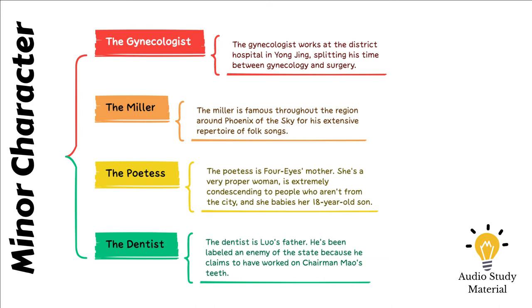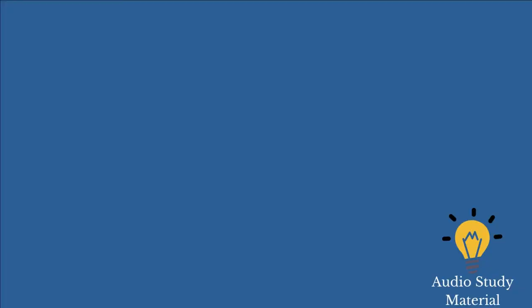Luo requests that the narrator keep a watch on the Little Seamstress while he and his sick mother are out of town. The narrator imagines himself to be a secret spy, and he generally enjoys the job. He begins to perform housework at the seamstress's home and discovers that he is extremely drawn to her.